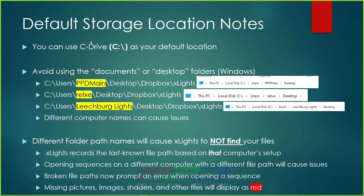Here are a few notes on default storage location. You can use C:\Dropbox — or replace 'Dropbox' with OneDrive, iCloud, Amazon, or whatever service you use. One thing I've learned is to avoid using the My Documents folder or My Desktop folder, because the name of your PC creates a user in Windows. You can see I have three different computer names here, and this is why it's challenging to synchronize across different locations using those default Windows folders.